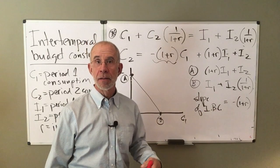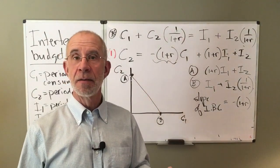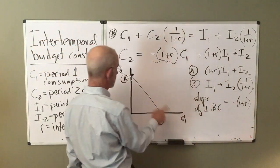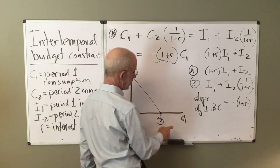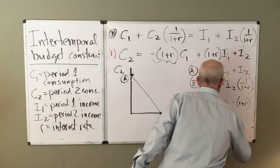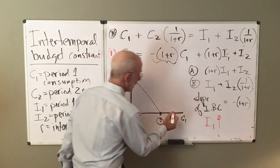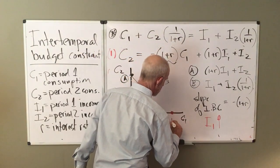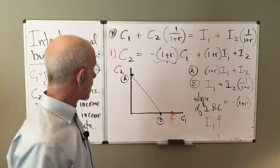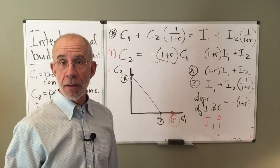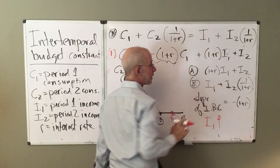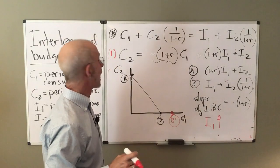So for example, if my income today were to go up, how would that affect things? Well, let's first look at that intercept. If income goes up in that first period, you'll be able to consume more C one. Just a direct increase in your consumption of that amount. How does it affect A?